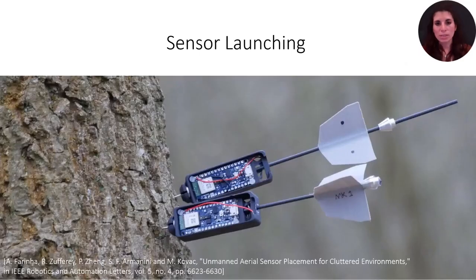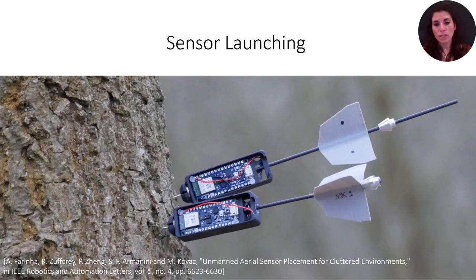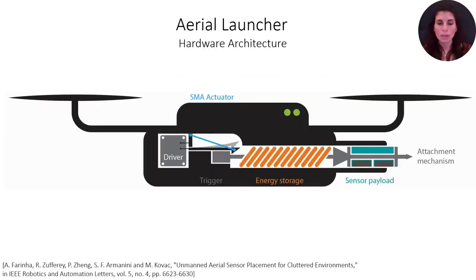Another way of addressing sensor deployment in forests would be through sensor launching, where there is no direct interaction between the target and the UAV, but the sensor onboard the UAV is launched towards the target. This can be extremely useful in environments where you can't access the surface directly due to obstacles or other constraints, so it would be ideal to keep a safety distance and still be able to attach a sensor. The full system is comprised of a sensory payload with an attachment mechanism, some form of energy storage — in this case a spring — a trigger mechanism, and an actuator as its driver. With the main requirement to keep everything small and lightweight, we took care of designing the trigger mechanism itself.